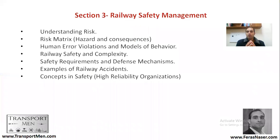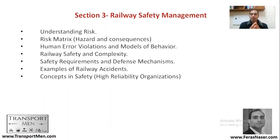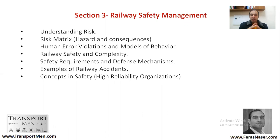In this section on railway safety management, we'll be talking about understanding risk, risk metrics, human error, violations and models of behaviors — how humans behave in general and how this can affect the safety of the railway network. We'll also be talking about railway safety and complexity, safety requirements, and defense mechanisms for railway systems.